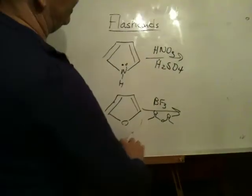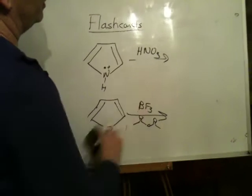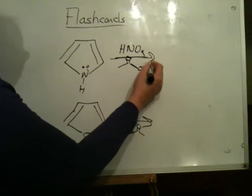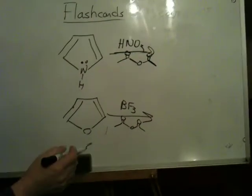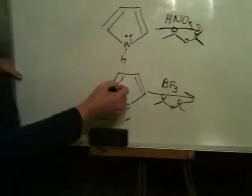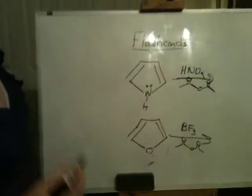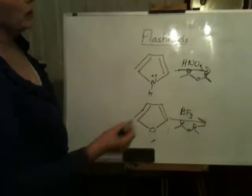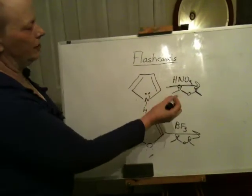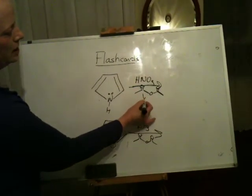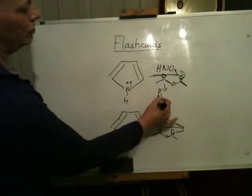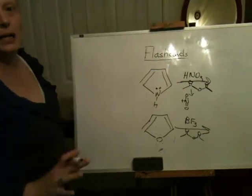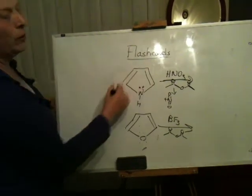Now, these look like kind of strange conditions. However, furan, this is furan, and pyrrole require milder conditions to undergo electrophilic aromatic substitution. You don't have to show how it's generated, but what I'm going to tell you is that these conditions generate NO2, the NO2 cation. Okay, so this is a nitration, but it's a milder nitration. I want you to figure out where it would hit.